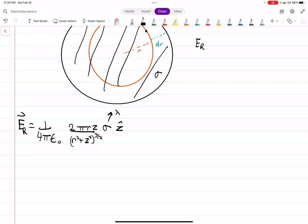This is for a single ring, and then the total electric field, I'm just going to factor out the constants. 1 over 4 pi epsilon naught times 2 pi sigma. z is a constant here, because we're not changing the point that we're looking at. We're integrating from 0 to r. r over r squared plus z squared to the 3 halves, dr.